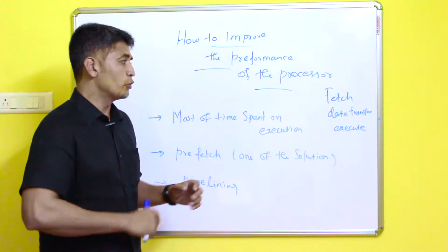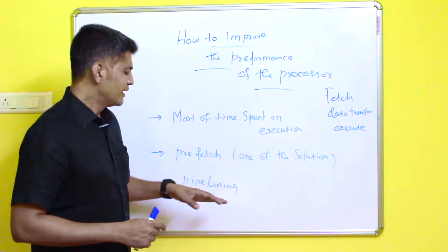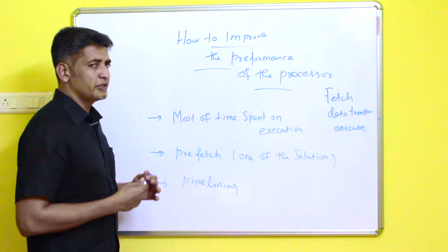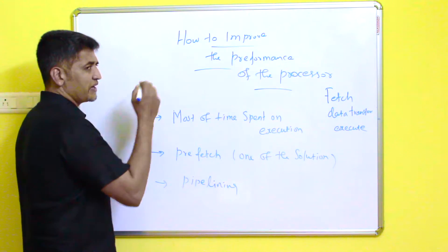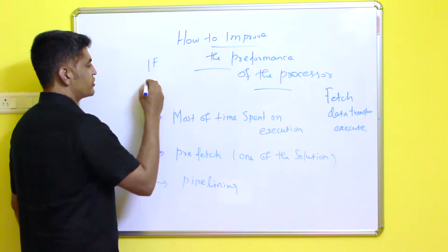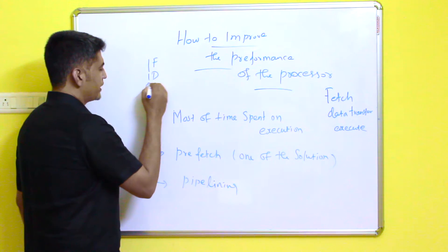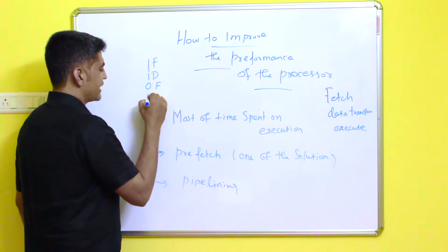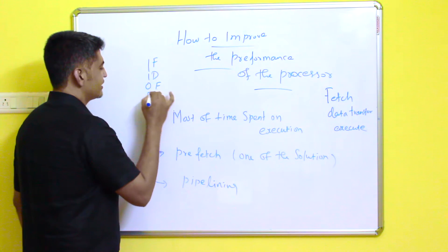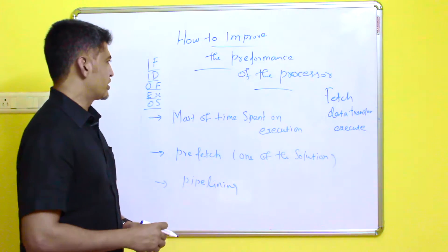This is one way to improve performance. Another solution is pipelining. In pipelining, you need to consider five phases in instruction execution: instruction fetch, instruction decode, operand fetch, execution, and operand store. These are the five stages in instruction execution.